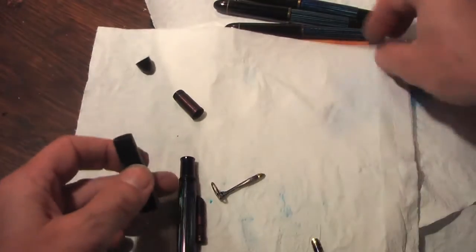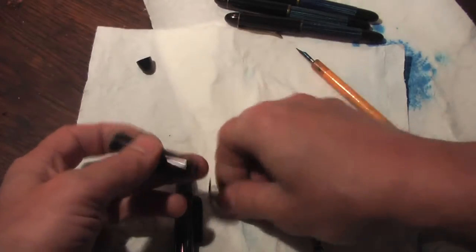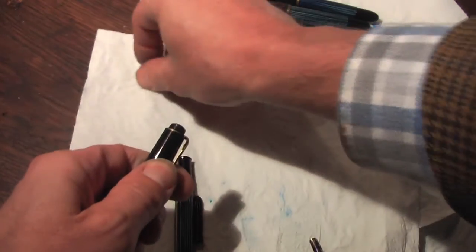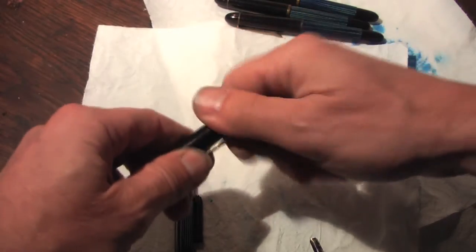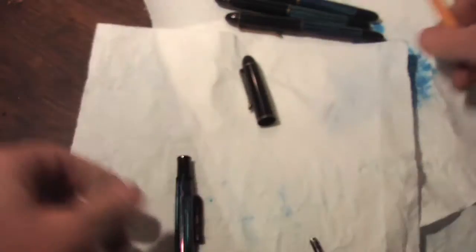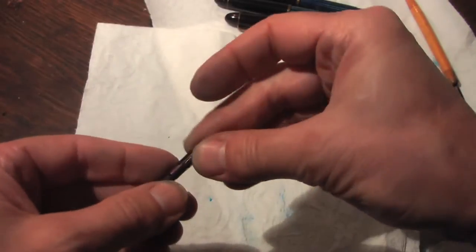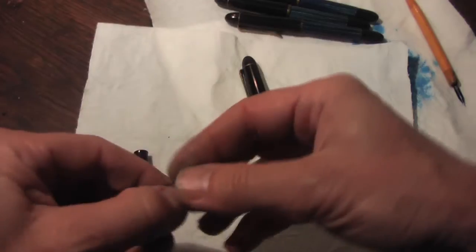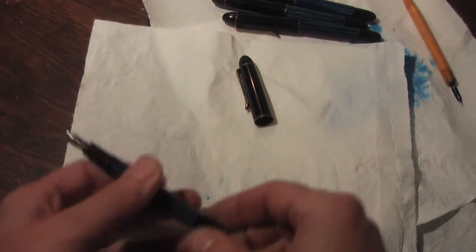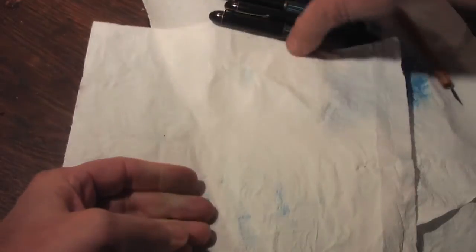Again a cap with this insert. In this case again a separate nib and an ink feed, and as you can see in case of the Pelican pens it's pretty easy to assemble these parts. There isn't so much friction needed.